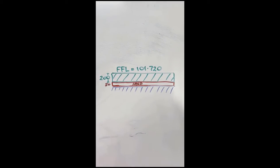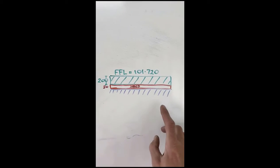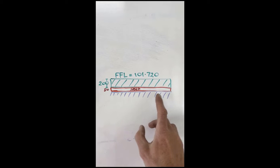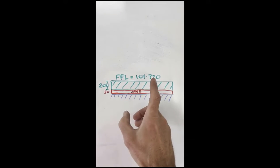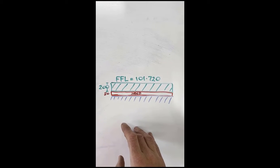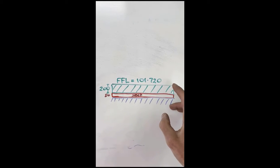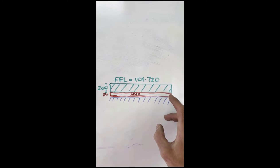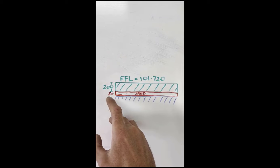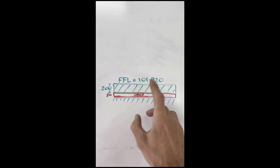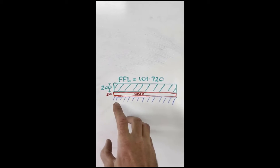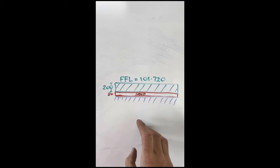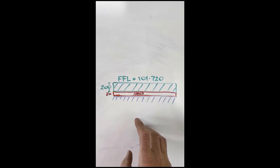Looking at the cross section, the site needs to be excavated to a flat pad underneath the sand. The finished floor level of the concrete is 101.720 — that's the top of concrete. There's 200 millimeters of concrete and 50 millimeters of sand, so we need to come down 0.2 and another 0.05 below that finished floor level to excavate to the blue line — a nice flat surface under the sand.